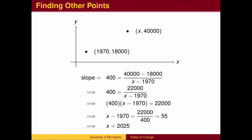We can also solve for the year. In what year will the population reach 40,000? We need the population to increase by a total of 22,000. At 400 people per year, this will take 55 years, so we will reach 40,000 people in the year 2025.